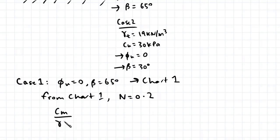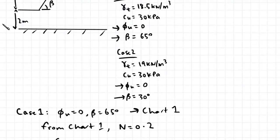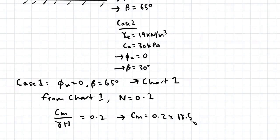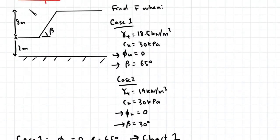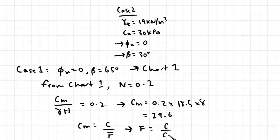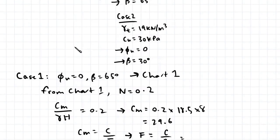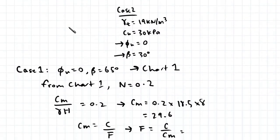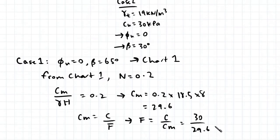From chart one, n is equal to 0.2, so our mobilized cohesion divided by gamma times H equals 0.2. We can then solve for our mobilized cohesion: CM is equal to 0.2 times gamma (18.5) times H (8), which works out to be 29.6 kPa. Our mobilized cohesion is also equal to cohesion divided by the factor of safety F. Rearranging, F equals cohesion divided by mobilized cohesion, so 30 divided by 29.6, giving us a factor of safety of 1.01.